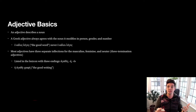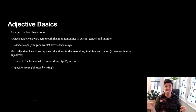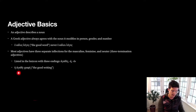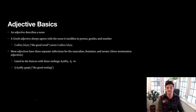These are called three-termination adjectives because they have three different terminations — that is, three different ways that they end. When you see these in a lexicon or dictionary, they're presented with the masculine ending on the word, then the feminine ending — so agathe in the feminine — and agathon in the neuter. An example of our three-termination adjective: he agathe graphe, 'the good writing,' where agathe is feminine, nominative, singular.